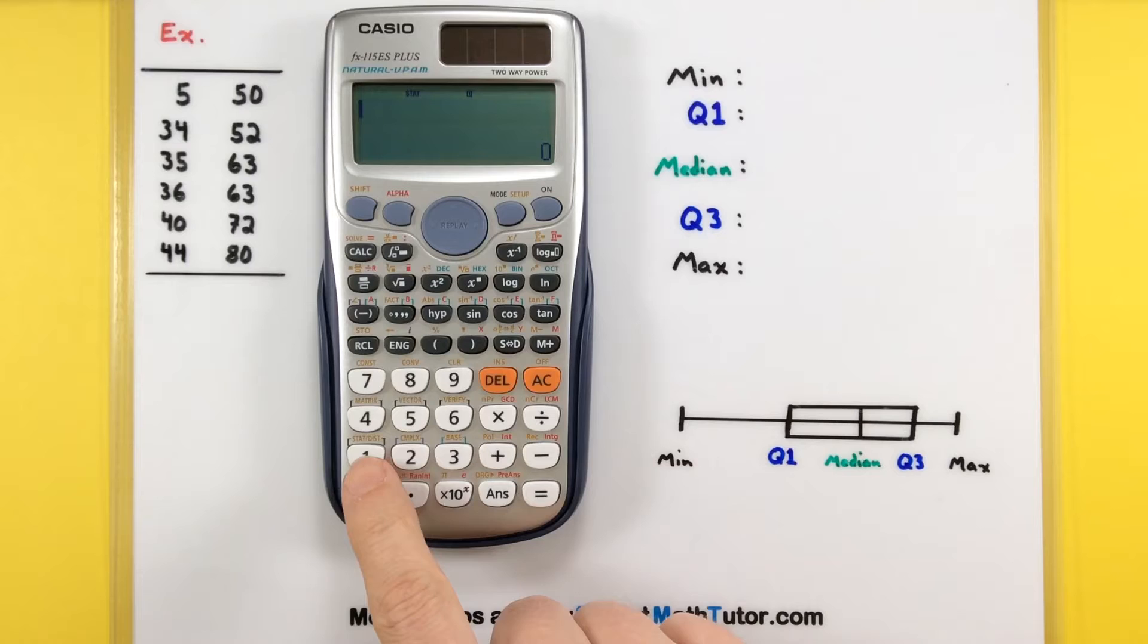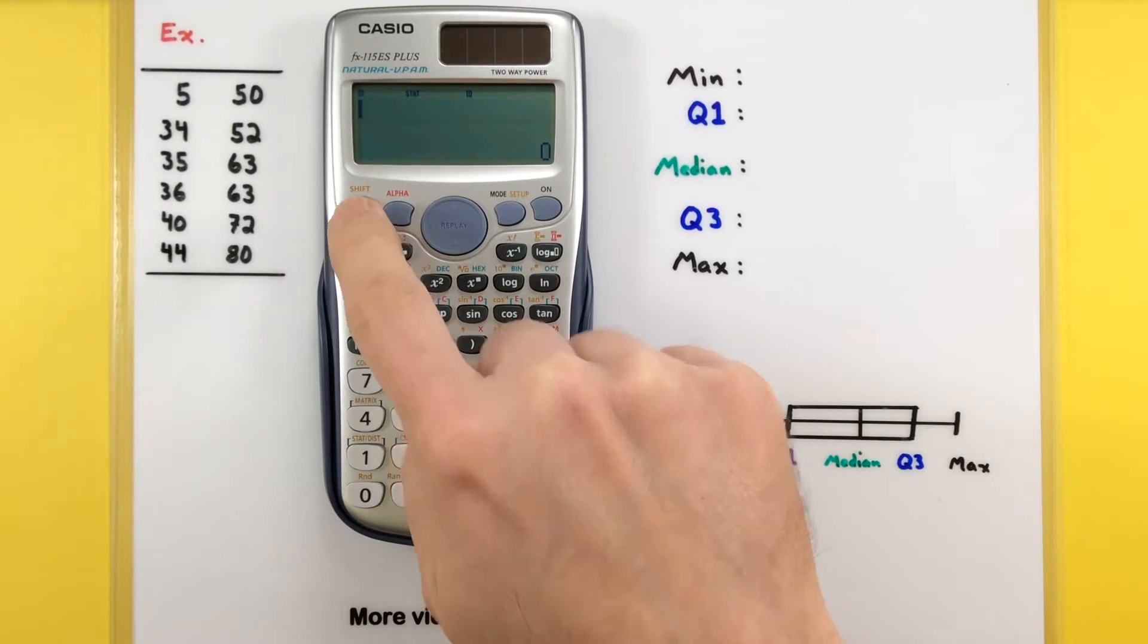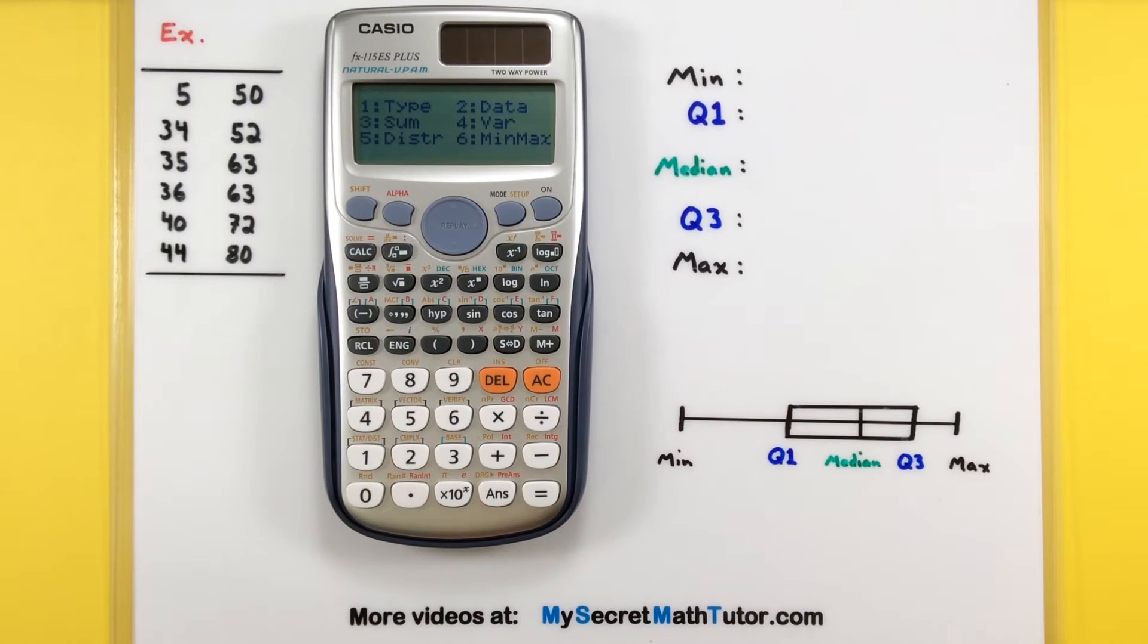To do that, you want to press your shift and then number one to go into your stat and distribution. Number two is where we can actually store in our data. So let's go ahead and press that.